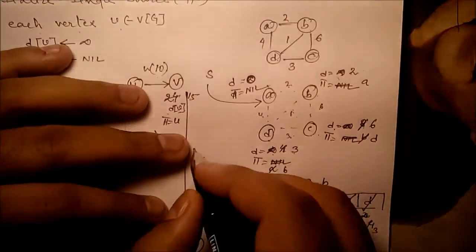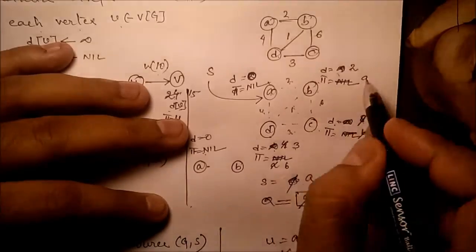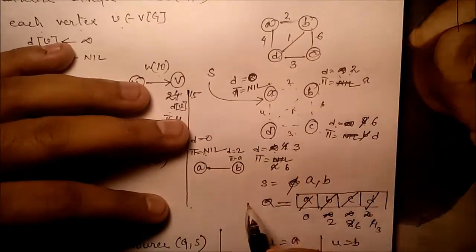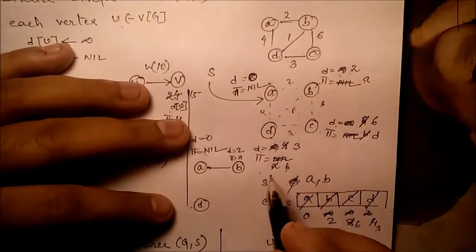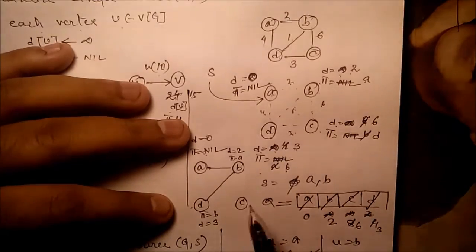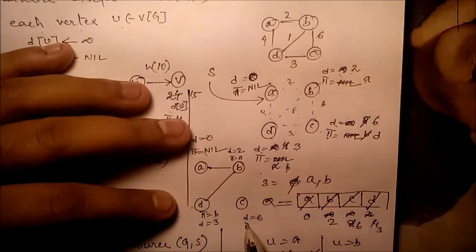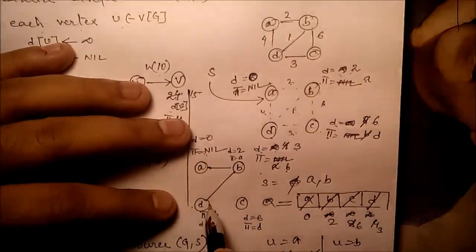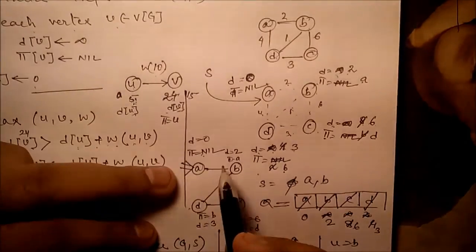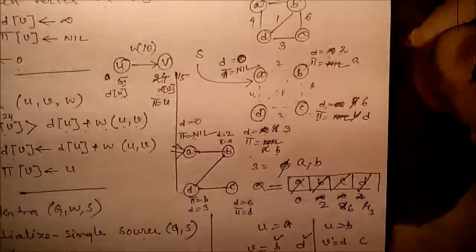The final result: a is the root node with d = 0 and π = nil. Node b has parent = a and distance = 2. Node d has parent = b and distance = 3. Node c has parent = d and distance = 6. This is the single source shortest path from a — the minimum distances to all nodes — representing the shortest path tree.